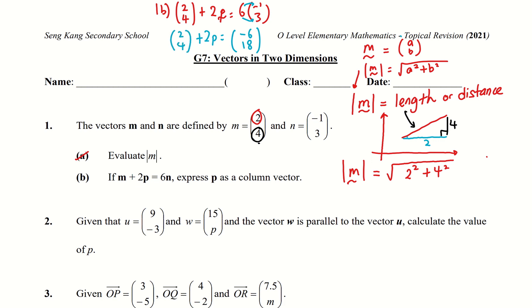So you want to bring this to the other side because you want to find p, right? So 2p is equals to negative 6, 18 minus 2 and 4.